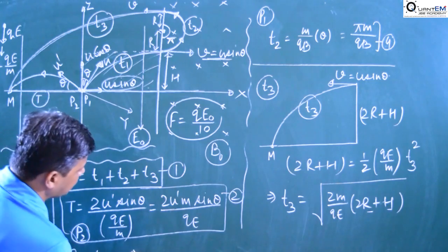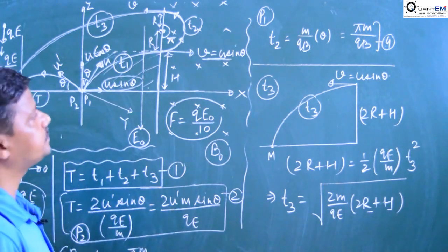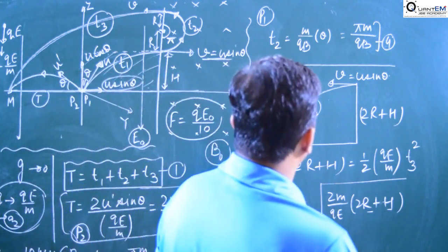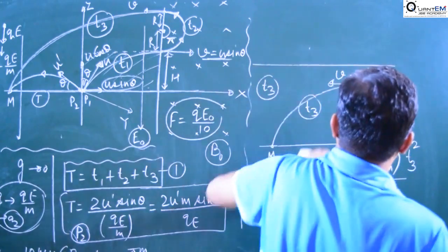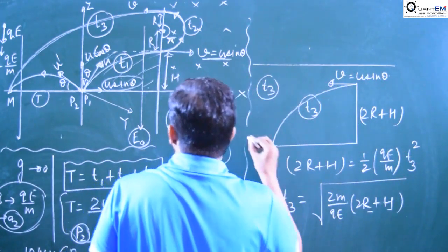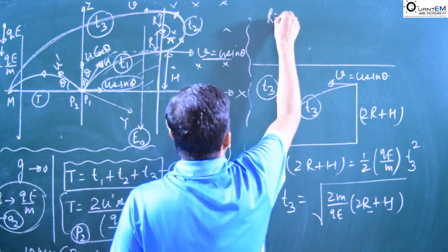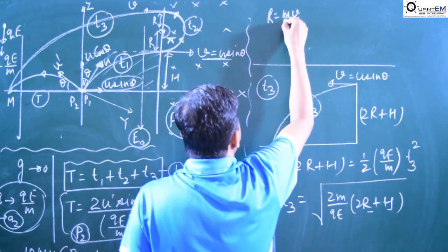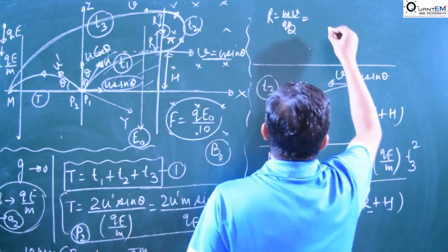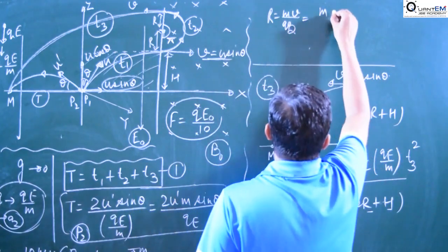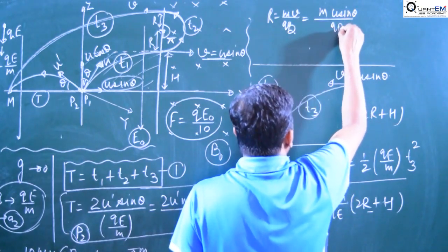We need to put t2 = πm/qB. But R and H are still unknown, so we must calculate their values. The radius of the circular path traced by the particle is R = mV/qB = mU·sinθ / qB.